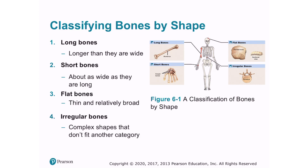The typical human skeleton contains around 206 major bones. They have four general shapes: long bones, which are longer than they are wide; short bones, which are about as wide as they are long; flat bones, which are thin and relatively broad; and irregular bones, which have complex shapes that don't fit into one of the aforementioned categories.